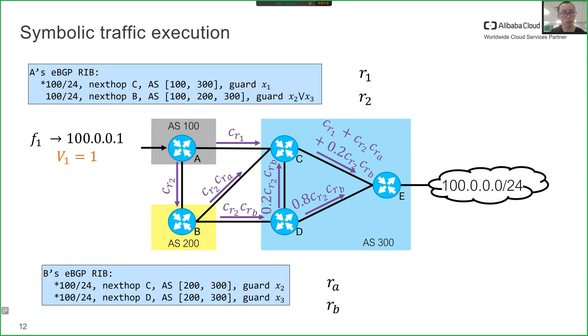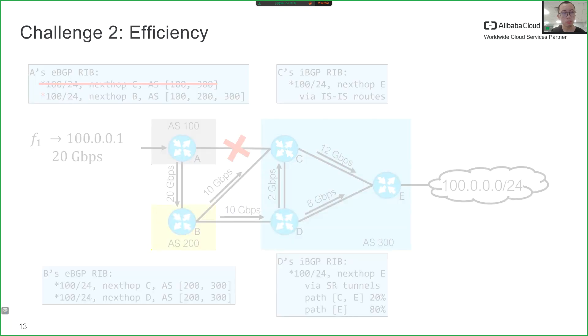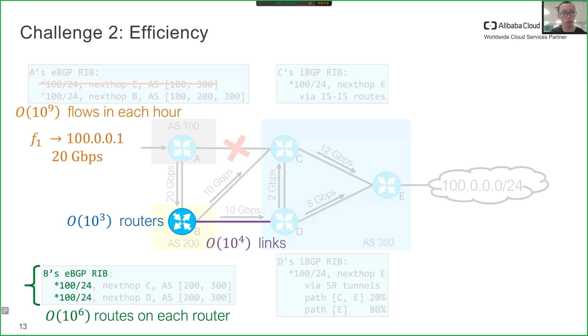So far, we have talked about the symbolic traffic execution framework. The next question is how to efficiently represent symbolic formulas. More specifically, WAN requires Yu to have efficient formulas including to be able to scale to a thousand routers, tens of thousands of links, millions of routes on each router, billions of flows per hour, and hundreds of millions of failure scenarios. This poses the second challenge of efficiency.